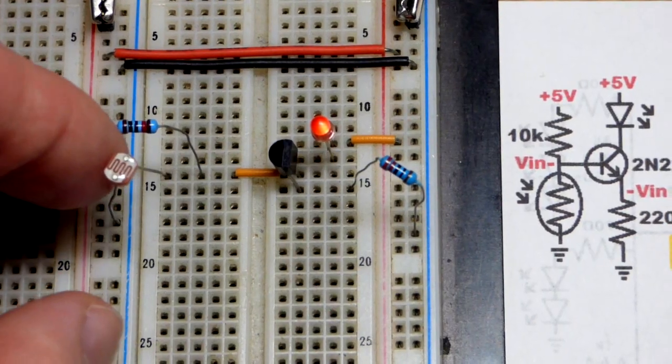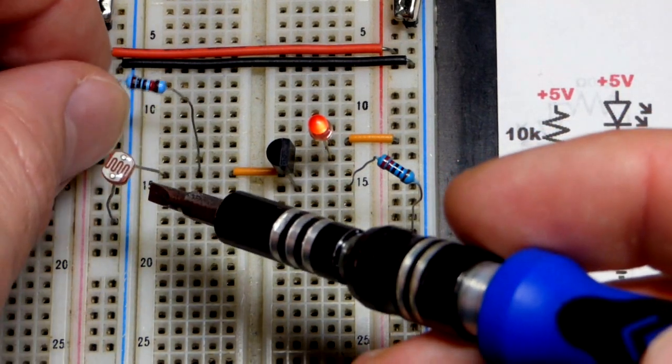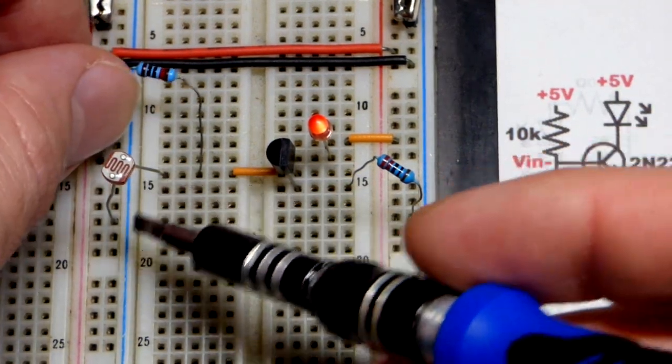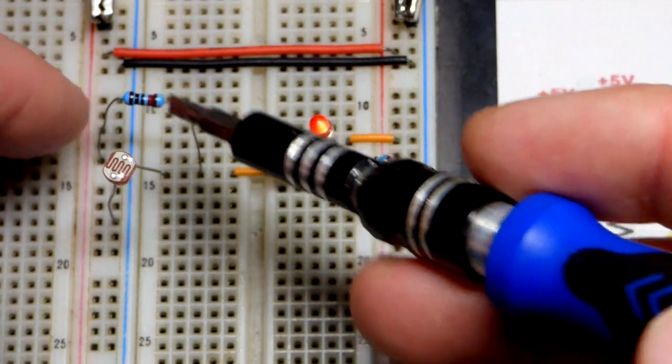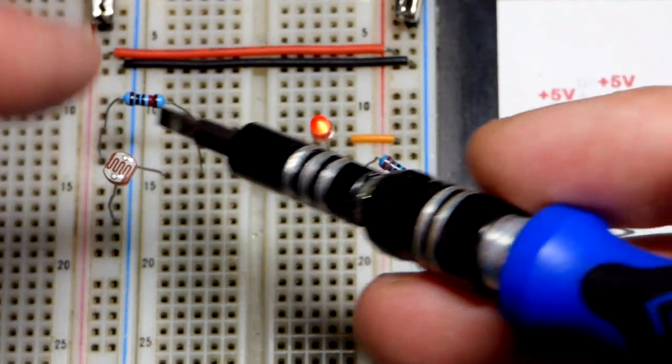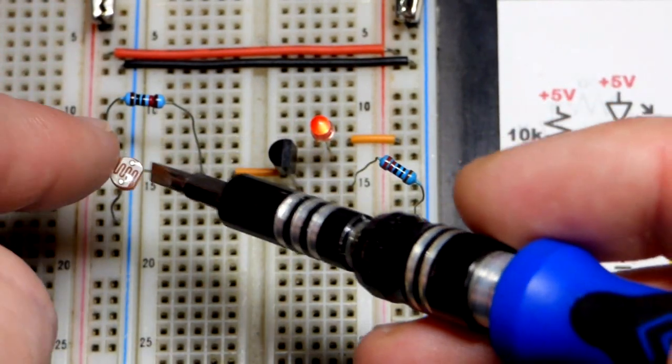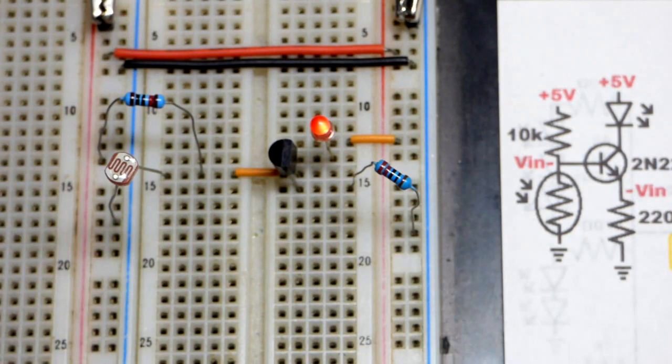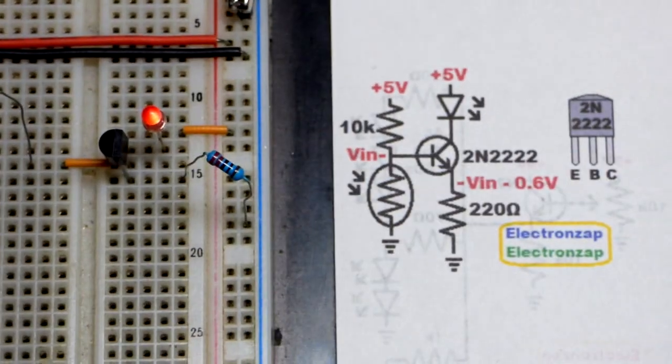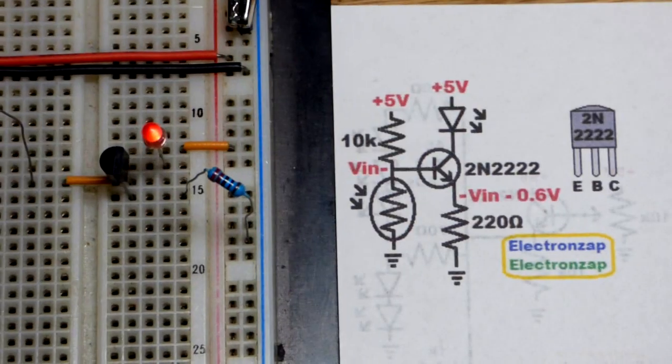The part of the circuit that senses the light level is the light dependent resistor here to the negative supply, and then we have a pull-up resistor to try to raise the voltage. But more light lowers the voltage that goes to the base, the middle pin of the transistor.